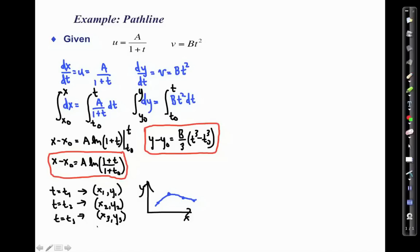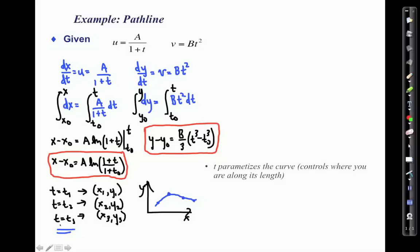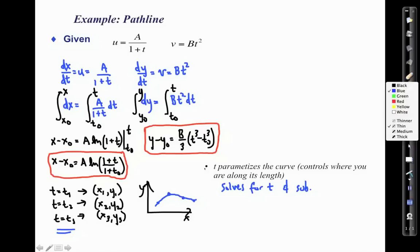Alternatively, we can find an explicit relationship between x and y by eliminating the parameter t. Since t parameterizes the curve — plugging in different values of t gives the (x, y) pairs and controls where you are along the path length — we can solve for t and substitute into the other equation to obtain an explicit formula for the pathline.